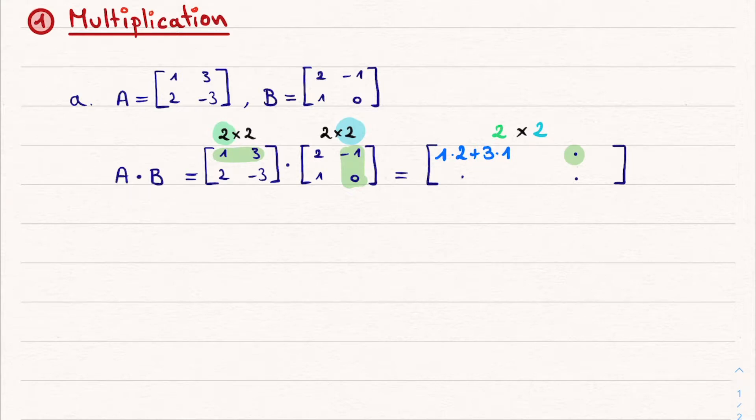And for this combination, again, we multiply and add the corresponding elements. For the lower left element, now on the second row and the first column, we can perform the same procedure. And likewise for the element on the second row and second column.